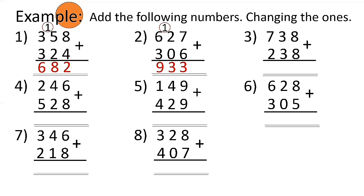Number 3: 738 plus 238 — 8 plus 8 equals 16, bring down 6, carry 1 to the tens place. 3 plus 3 is 6, plus 1 is 7 in the tens. 7 plus 2 is 9 in the hundreds. So the answer is 976.